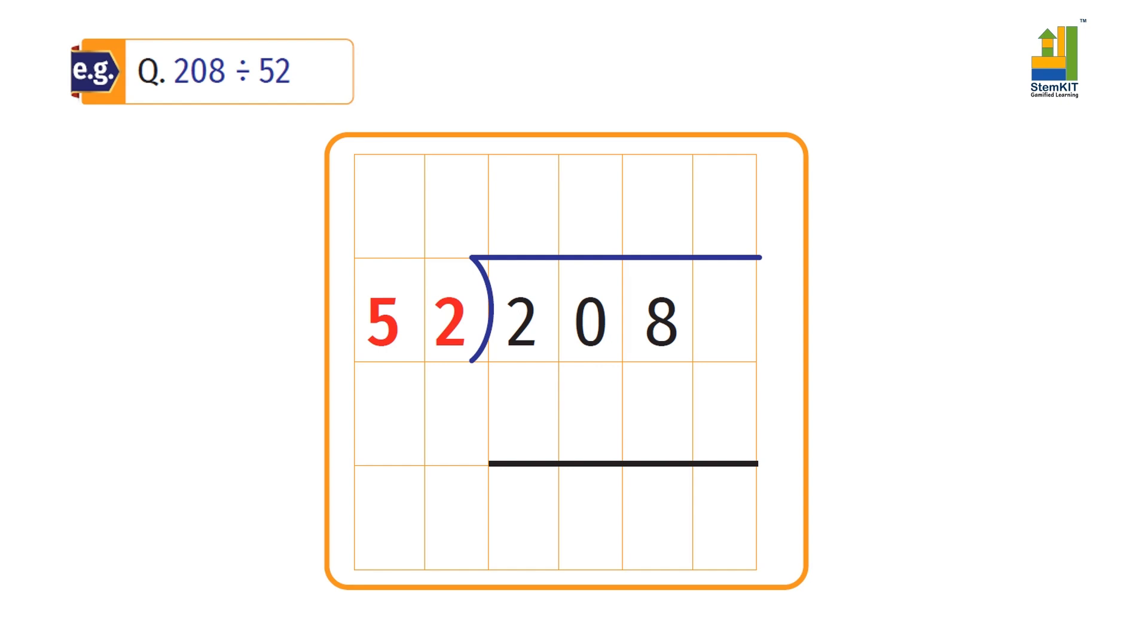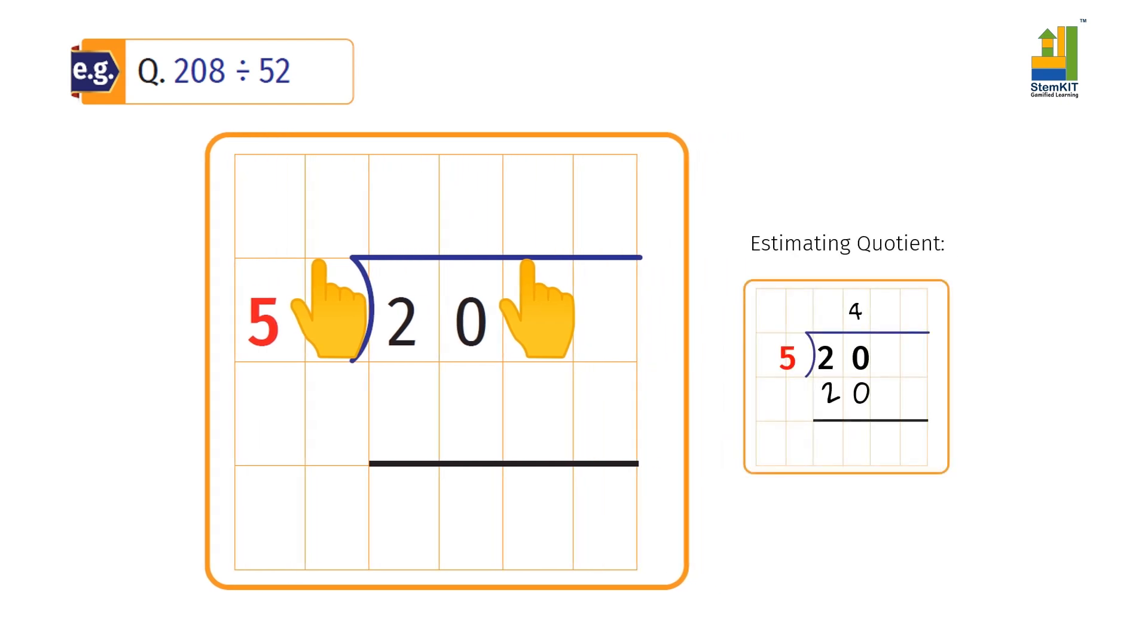We don't know the table of 52, so we hide the last digit of both divisor and the dividend. We have 20 divided by 5. That's easy. That's equal to 4. Now remember, this is an estimate.